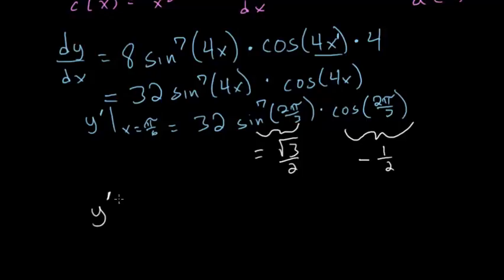So we have that y prime evaluated at x equals pi over 6 is equal to 32 times this root 3 over 2 raised to the 7th power, and then we have to multiply by minus 1 half.